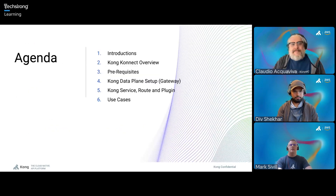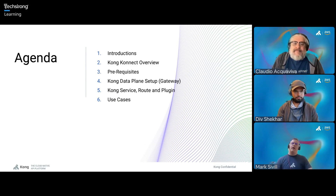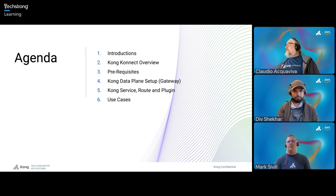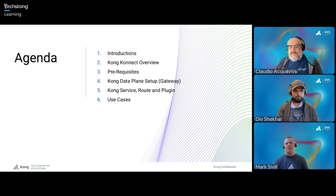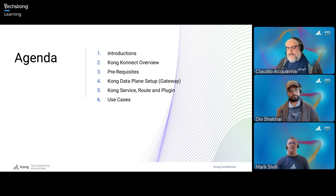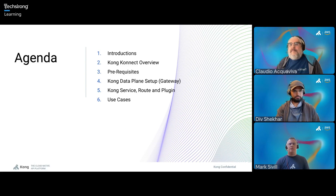So just before we get hands-on, I wanted to give you an overview of what we're doing in terms of an agenda. Before we get to the hands-on, just give you a little bit of scene-setting with what Kong Connect is. After my introduction, Div will go through the prerequisites of what needs to be done — getting you spun up on Connect and set up in AWS. He'll then go through setting up a data plane, and then set up some basic services, routes, and plugins. Claudio will top us off with some other use cases beyond the simple use case that Div will show. That's what we're planning to do for the next couple of hours.